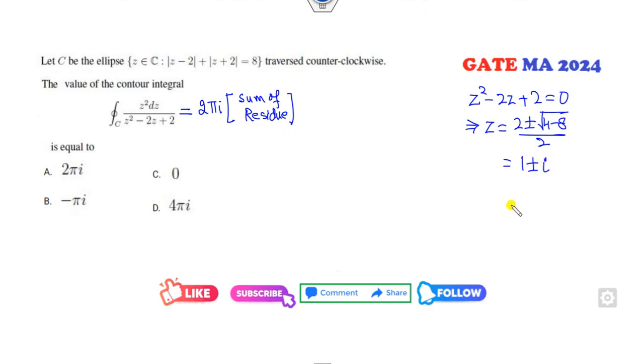That is 1 ± i. So you have two poles: one is 1+i and the other is 1-i. Now I will check whether these two poles satisfy this ellipse condition or not.